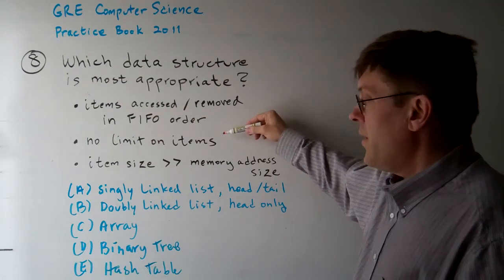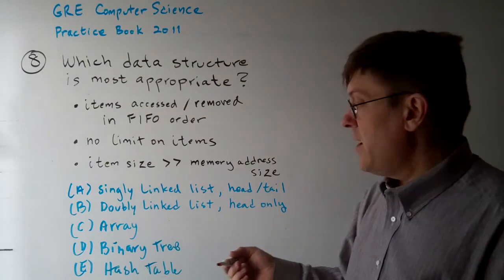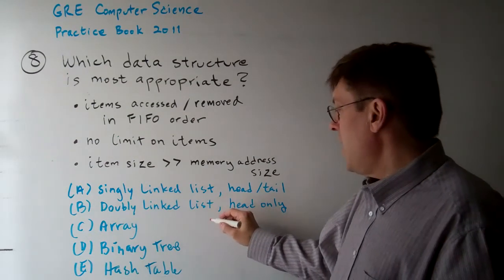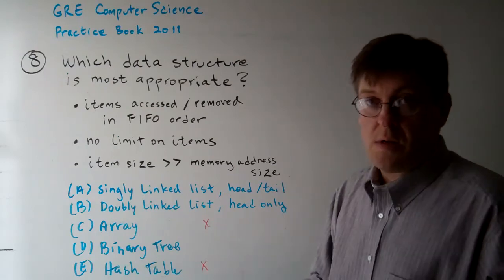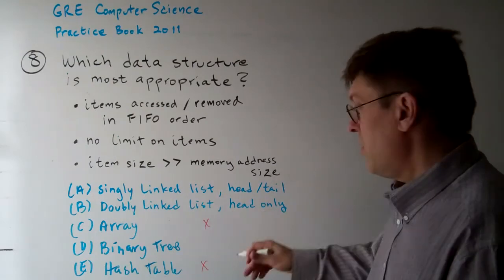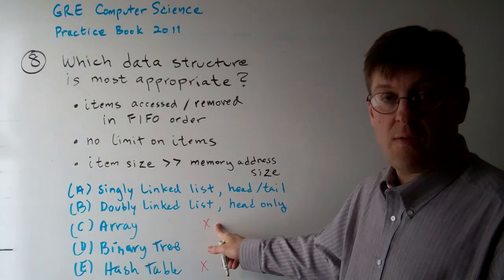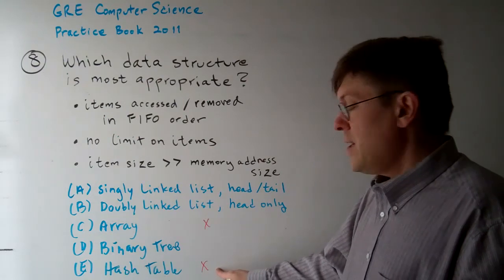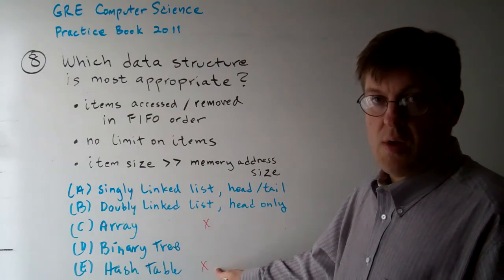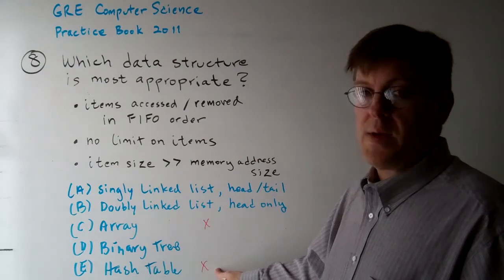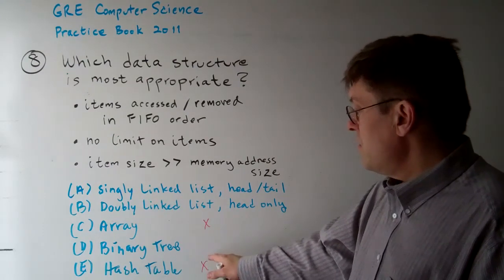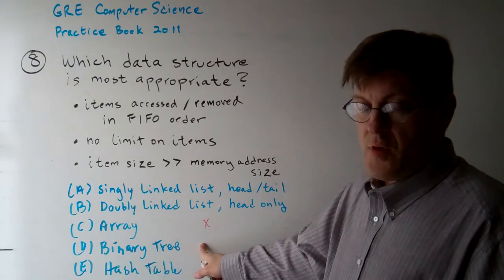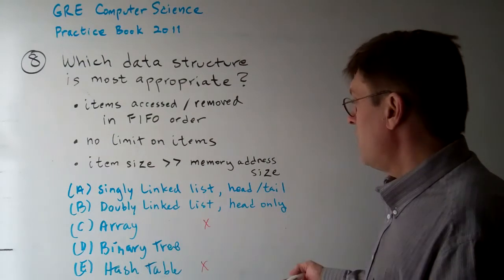Second, there's no limit on the number of items. If it could be big or could be small, then a hash table and an array are definitely out — with the array, you have to set it up big enough to handle all items, and with a hash table, you might have contention for the same hash value if it's not big enough. The tree structure is also not designed for first-in, first-out — that's a different type of thing.